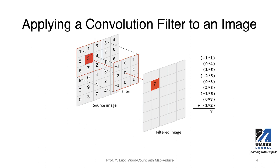Let's take a closer look at how we apply a convolutional filter to an image. On the left side we have a source image with 5x6 pixels. We have a filter, which is a 3x3 filter, and we're going to overlay it on the original image and do some computation. The computation is to multiply the corresponding pixels with the corresponding positions in the filter, and then add all these products together.